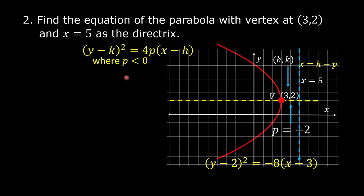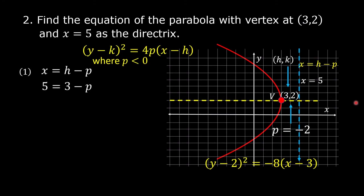If you want a full solution, solve for p using the equation of the directrix: x = h minus p. Replace x with 5 because the directrix is x = 5, and replace h with 3. So we have 5 = 3 - p. Transpose -p to the left side and change its sign to positive. Transpose 5 to the right side and change its sign to negative. So p = 3 - 5, giving p = -2.